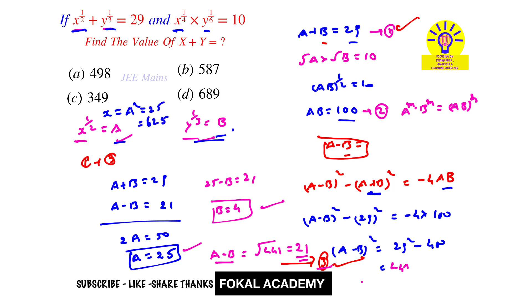And y equals b cube. B is 4, so 4 cube equals 64. By adding these two terms we get 625 plus 64 equals 689.